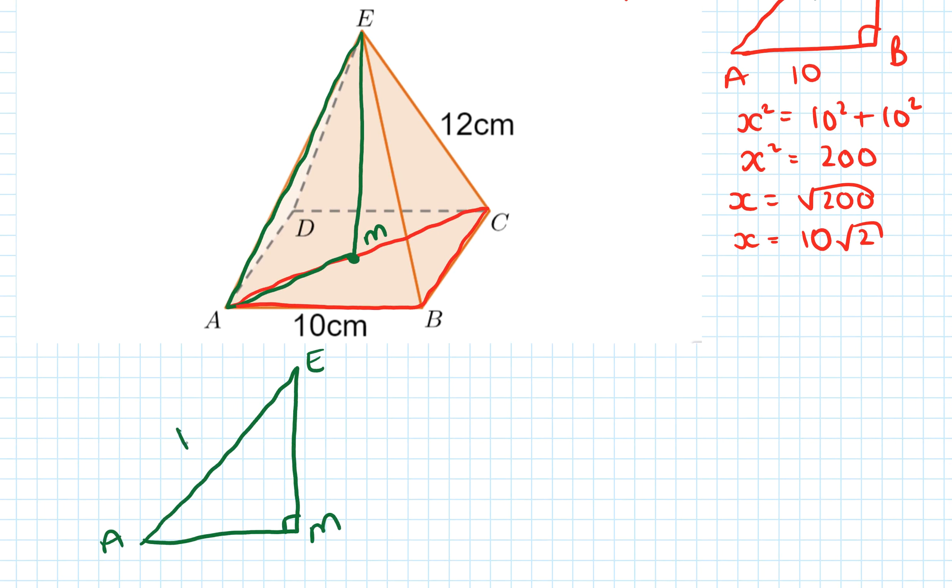A to E is 12 because it's the same as the other diagonal side. A to M is just half of the whole AC length, so if the AC length was 10√2, that one must be 5√2. Let's call this EM as y - we've already used x.